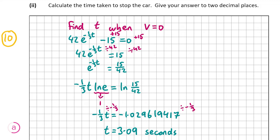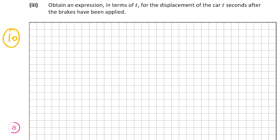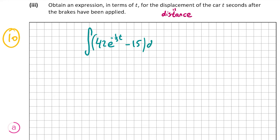Now we look at Question A, Part 3, which is also worth 10 marks. Here we have to obtain an expression in terms of t for the displacement of the car t seconds after the brakes have been applied. Displacement is the same as distance. Working backwards from velocity to distance means we integrate the function for velocity: the integral of (42e^(−t/3) − 15) with respect to t.